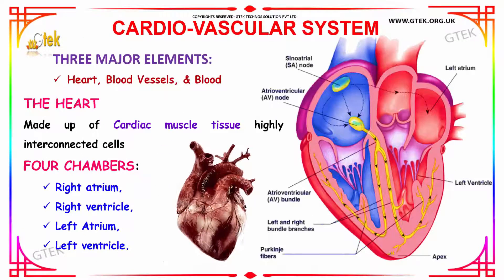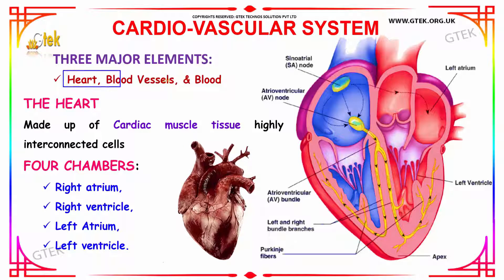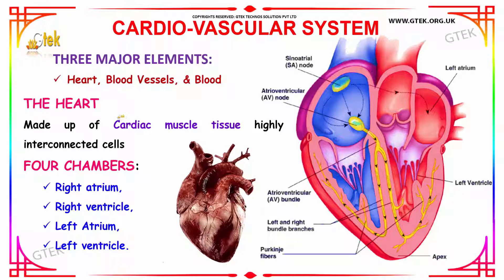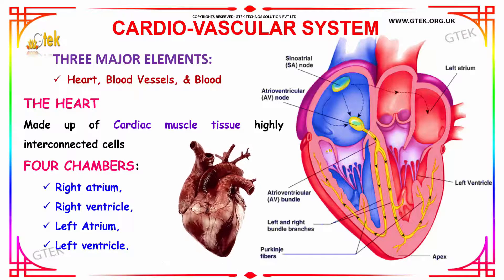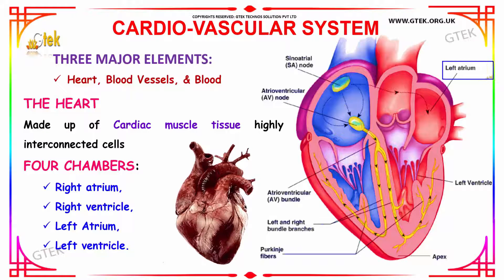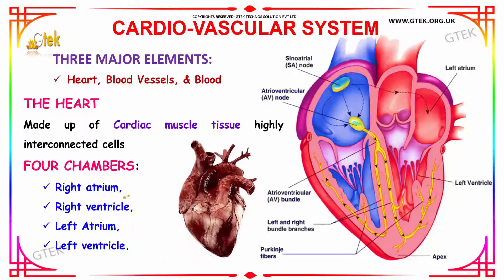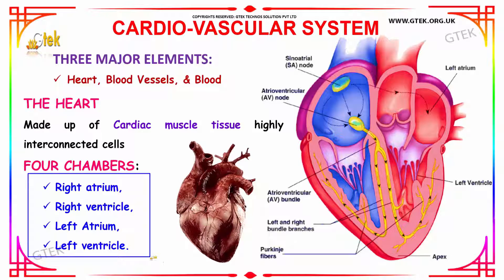Next we are going to see about the cardiovascular system. There are three major elements: the heart, the blood vessels, and the blood. Your heart is made up of cardiac muscle tissue which has highly interconnected cells. The heart has four chambers which are the right and left atrium and the right and left ventricle. You can see the left atrium, left ventricle, right ventricle, and right atrium — these are the four chambers in which blood is pumped in and out.